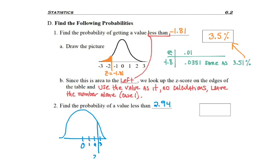Then I go and draw my z-score, positive 2.94. It's going to be past the 2 but not as far as the 3. And which way am I going to shade on this one? Yeah, I'm going to shade to the left because it asks for less than.